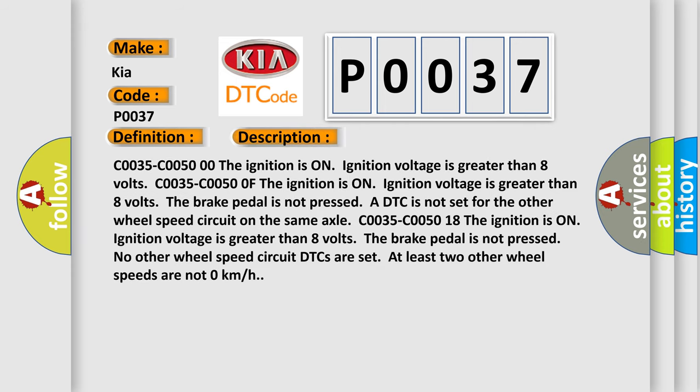C0035-C0050 00: The ignition is ON, ignition voltage is greater than 8 volts. C0035-C0050 0F: The ignition is ON, ignition voltage is greater than 8 volts. The brake pedal is not pressed. A DTC is not set for the other wheel speed circuit on the same axle.